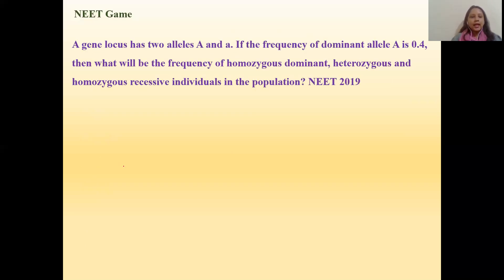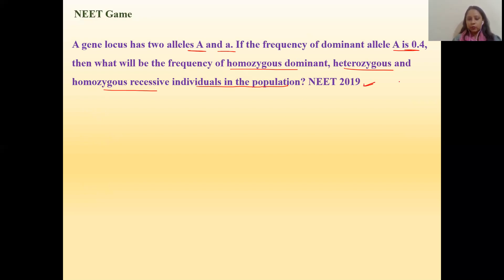The next question says: a gene locus has two alleles, capital A and small a. If the frequency of the dominant allele is 0.4, what is the frequency of homozygous dominant, heterozygous, and homozygous recessive individuals in the population? This is a NEET 2019 question, so you can understand its importance. Always write down what values are given in the question and what is being asked.